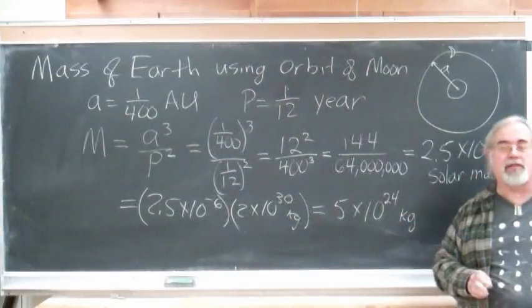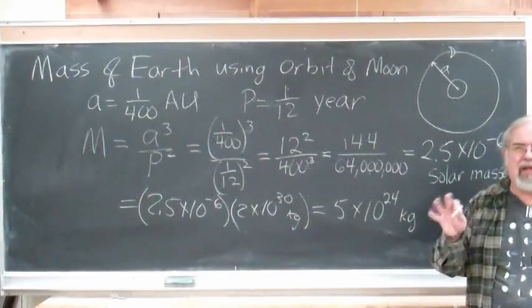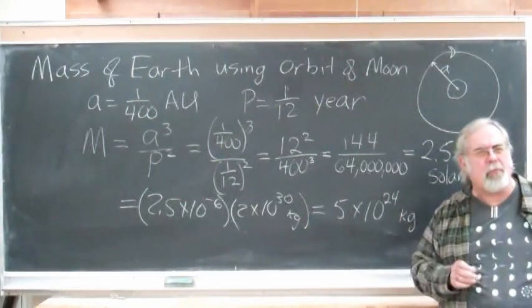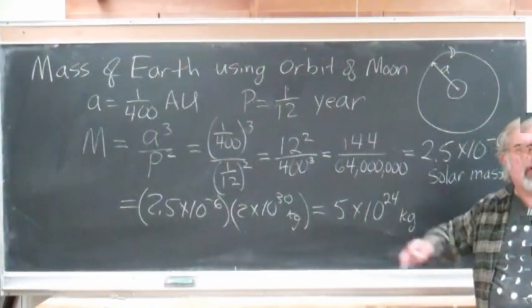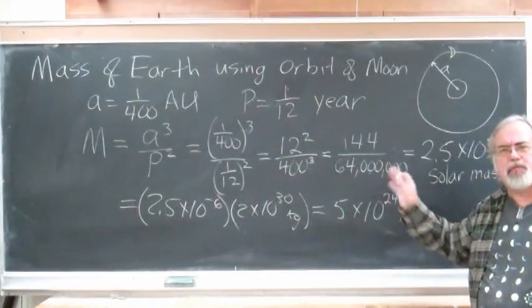And that is almost right. The mass of the Earth is a little bit more than that. It's about 5.9 times 10 to the 24th. But for this rough calculation, that's pretty good.